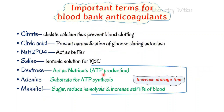Important terms for blood bank anticoagulants — please remember very carefully, this is very important. First is citrate: it chelates the calcium, thus preventing blood clotting. In the coagulation cascade, calcium is one of the very important factors; if we remove this factor using citrate, the blood cannot clot.